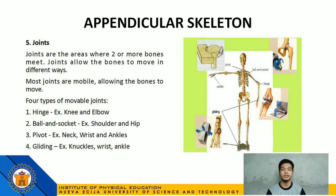Number 5: Joints — the areas where 2 or more bones meet. Joints allow the bones to move in different ways. Most joints are mobile. There are 4 types of movable joints: Number 1, Hinge — examples are the knee and elbow; Number 2, Ball and socket — examples are the shoulder and hip; Number 3, Pivot — examples are the neck, wrist, and ankles; and Number 4, Gliding — examples are the knuckles, wrist, and ankle.